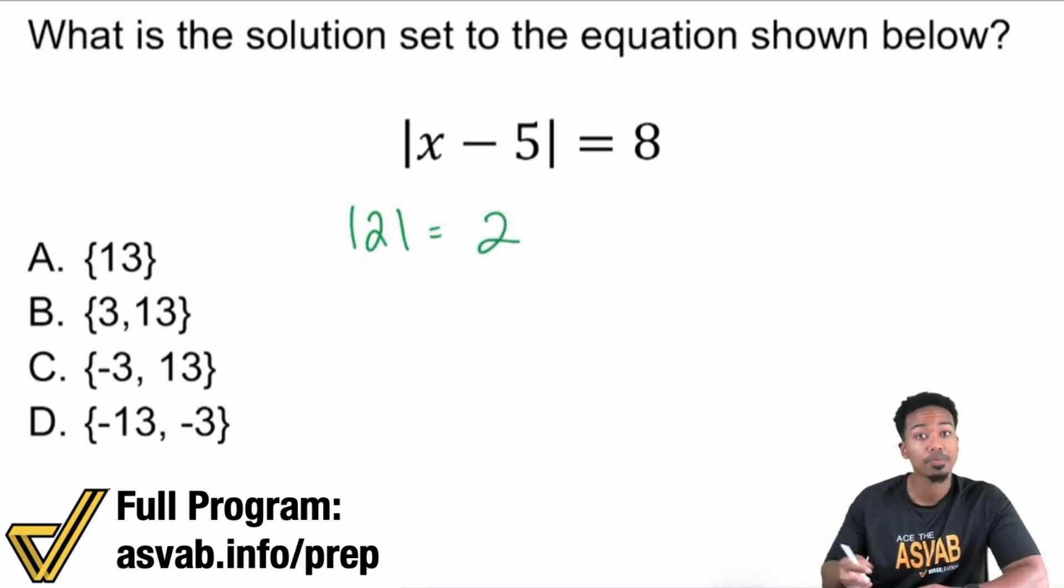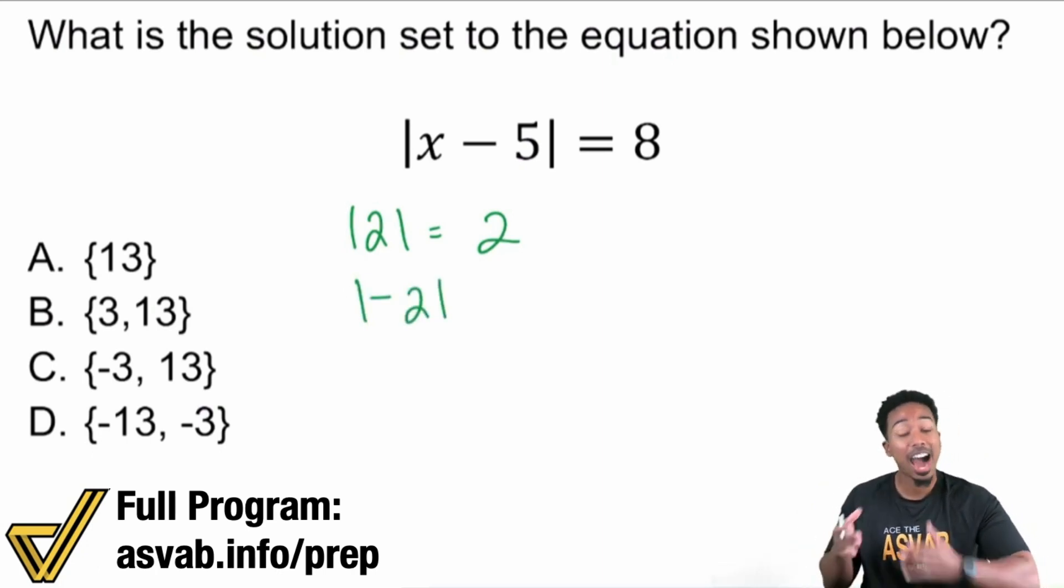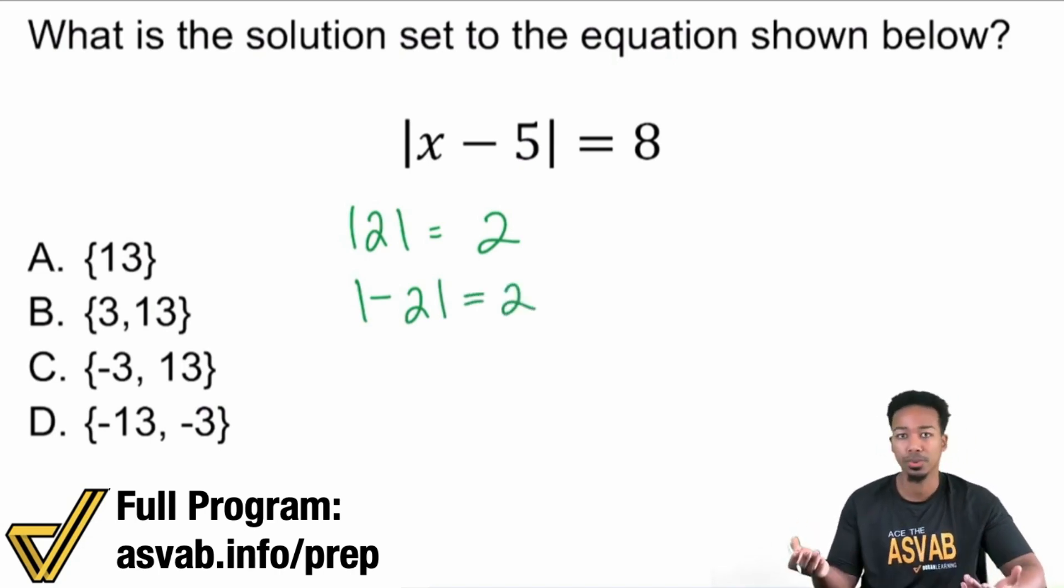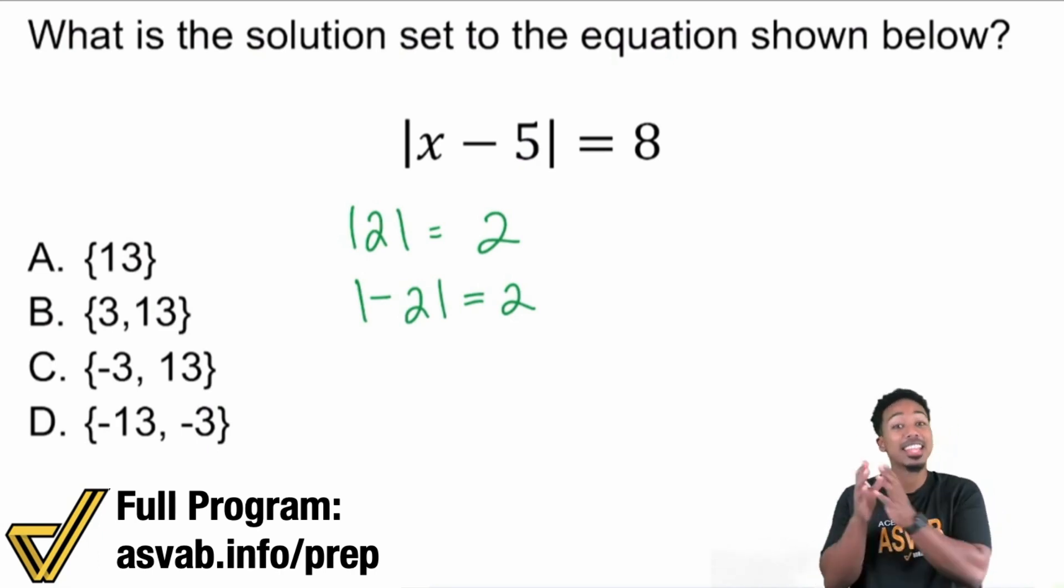But on the flip side, if we were to say, hey, what's the absolute value of negative two? What we're saying there is, hey, how far is negative two from zero, which is still two spaces? It's still two. So what absolute value does, and write this down, pause the video if you need to. What absolute value does is it tells you the distance, the distance that that number is from zero. That's why no matter what number you get, you will make it positive. That's why.